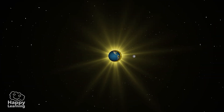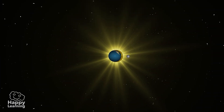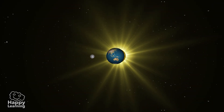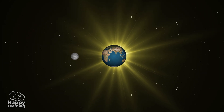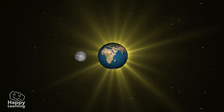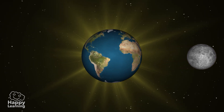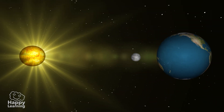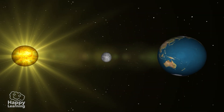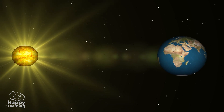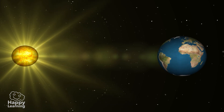An eclipse occurs when an astronomical object is temporarily obscured. Sometimes the Earth is placed between the Sun and the Moon, and other times the Moon is situated between the Earth and the Sun. These are eclipses, but let's investigate it better.